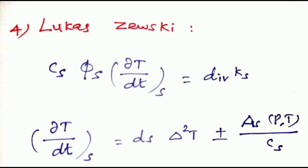Fourth theory for DTA is Lucas-Zvezky: cs times pi s times dT by dt equals del squared T plus or minus as times p, t by cs.